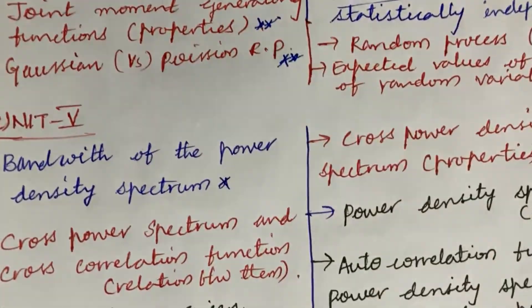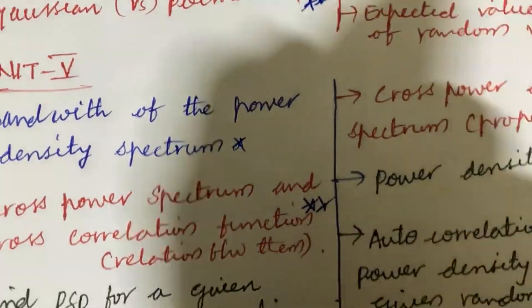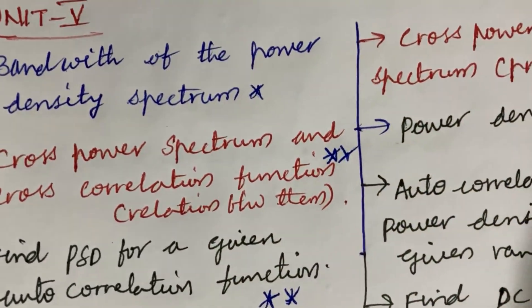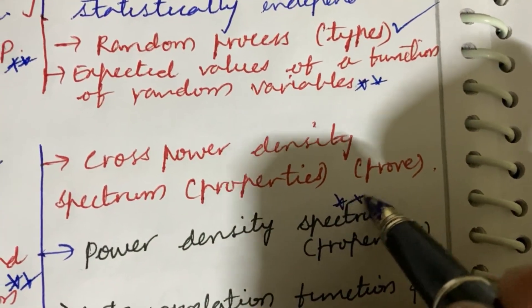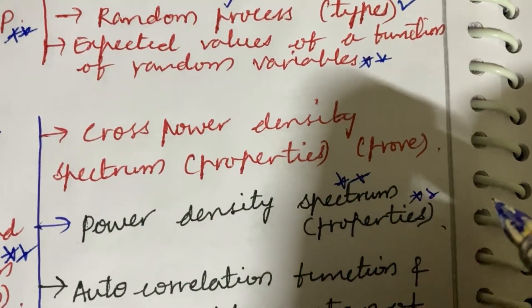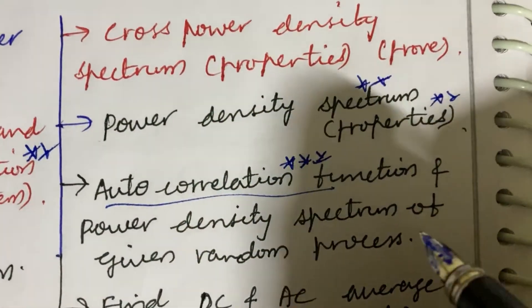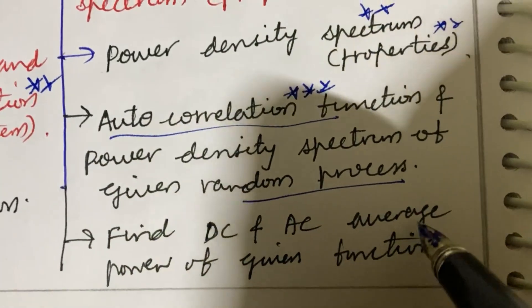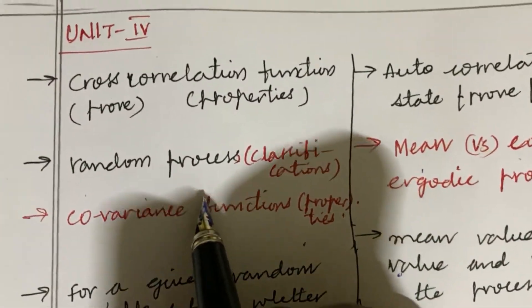Moving to Unit 5: Bandwidth of the power density spectrum — define and explain. Cross power spectrum as well as cross-correlation function and the relation between them is a top most question. Find PSD for a given auto-correlation function — problems related to the auto-correlation function are damn sure questions. Power spectral density spectrum — state, prove, and properties. Auto-correlation function is a damn sure gunshot question. Power density spectrum of a given random process, and finding DC and AC average power of a given function, are top most questions.